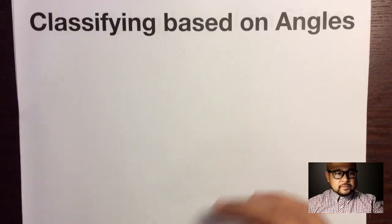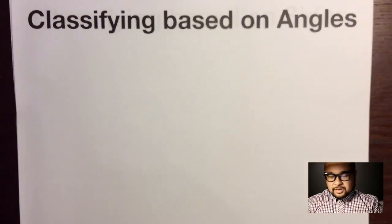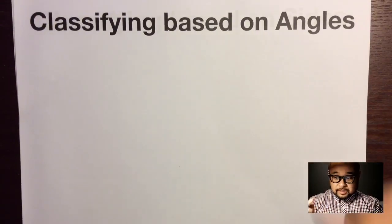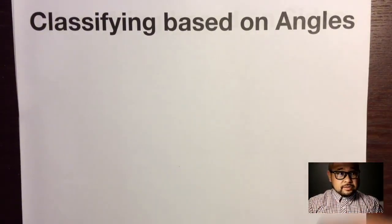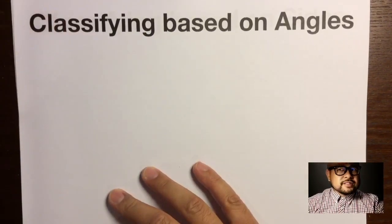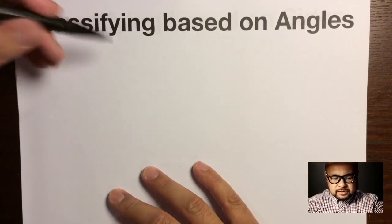What we're going to do today is classify one shape — the triangle. We're going to classify triangles into a few different types, based off two things: angles and sides.